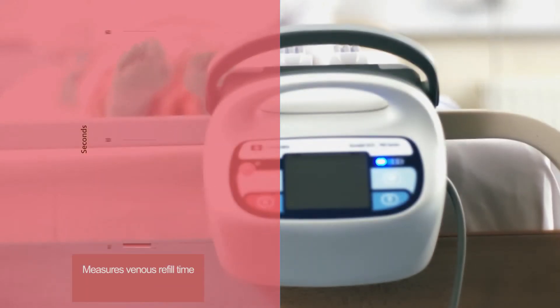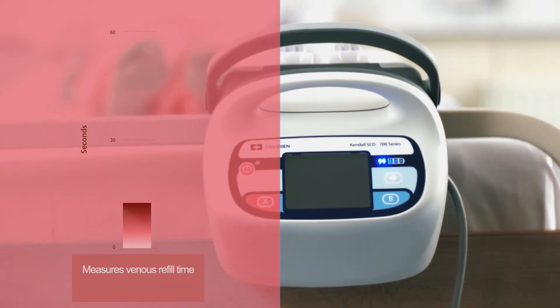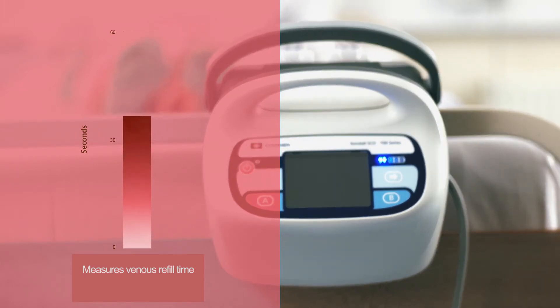VRD works by measuring the time it takes for a patient's veins to refill with blood after being compressed, and then setting the frequency of compression cycles on the patient's specific venous refill time, anywhere between 20 and 60 seconds.